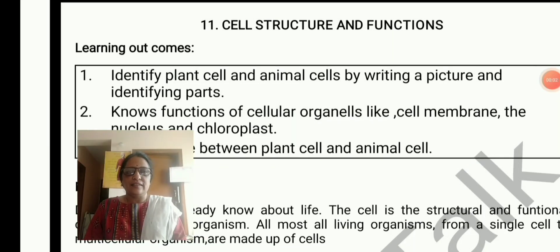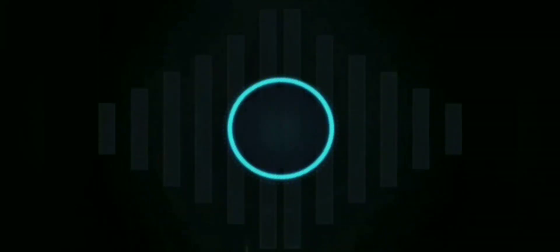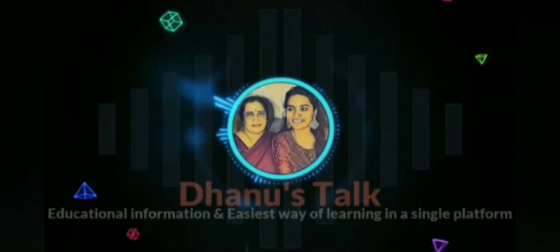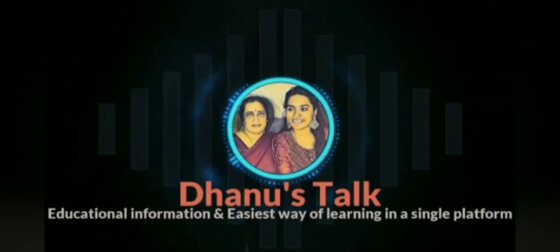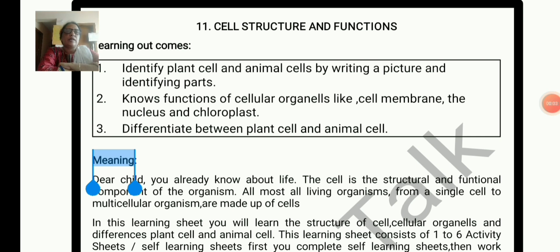Hi everyone, Kalika Chetarike. Learning Sheets Activity Solutions for Class 8 Standard, Subject Science, English Medium. Welcome to Themistalk. Cell Structure and Functions, Learning Outcomes: Identify Plant Cell and Animal Cell and identifying the parts and functions of cellular organelles like cell membrane, nucleus and chloroplast, and differentiate between plant and animal cell.